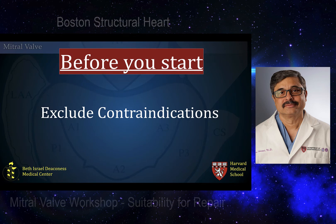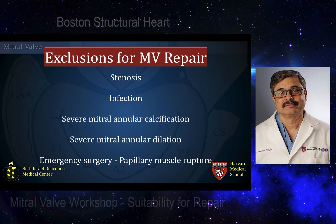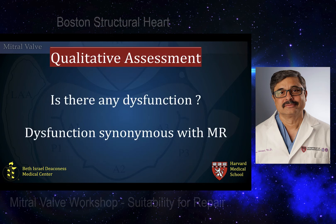Before you start, always exclude contraindications — that is step one. It is quite possible to get far ahead into the examination and then find that the patient has significant stenosis, active infection, severe mitral annular calcification, or severe mitral annular dilation. These are all exclusionary criteria for performing a mitral valve repair operation.